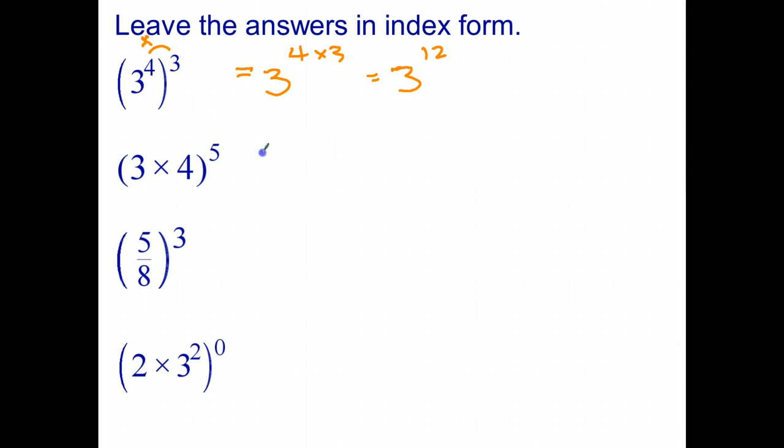The next index law you learned is when you've got 3 times 4 in brackets, all to the power of 5. When you're doing the index laws, we're not going to actually multiply those. We're going to just keep them as they are. And the index law says 3 by 4, all to the power of 5, is 3 to the power of 5 times 4 to the power of 5.